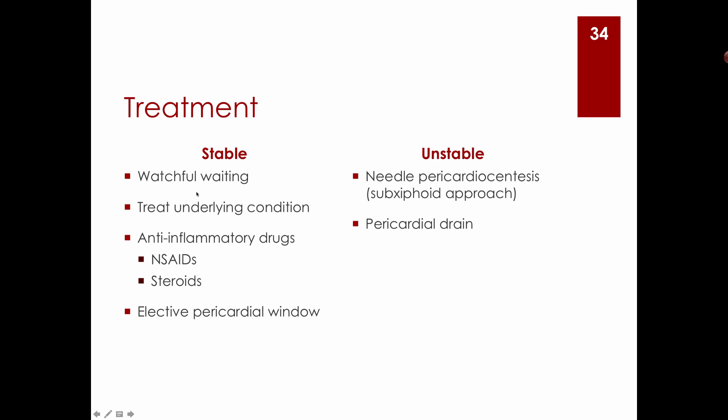Treatment for stable pericarditis involves watchful waiting, treating the underlying inflammatory condition with NSAIDs or steroids. If too much fluid accumulates, it can be drained once. If it re-collects, a pericardial window is surgically created — a hole in the pericardium so fluid can drain continuously and not compress the heart. Unstable cardiac tamponade requires needle pericardiocentesis and placement of a pigtail drain.